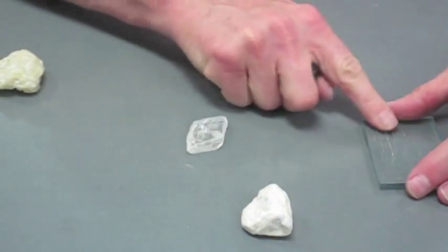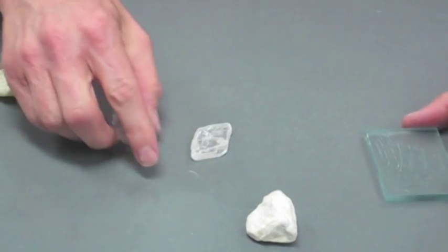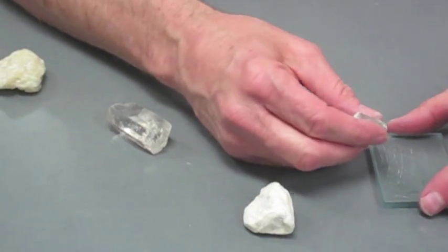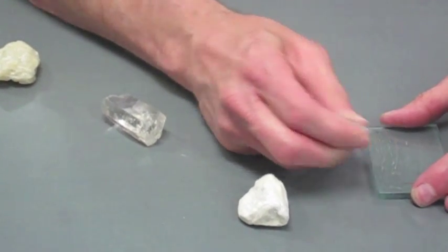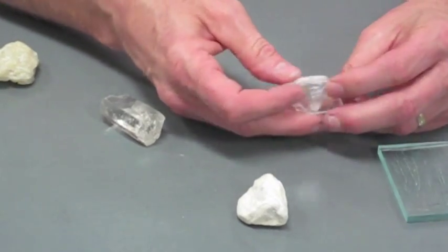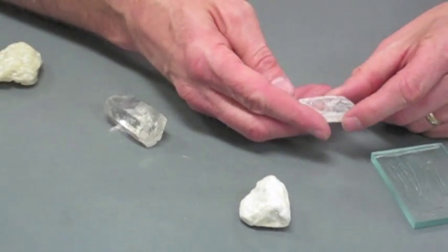Quartz will scratch the glass plate. You can see lots of scratches there, but the gypsum won't. Remember, the gypsum's soft, only a hardness of two. So if you're thinking you might have gypsum, I'd test the hardness.